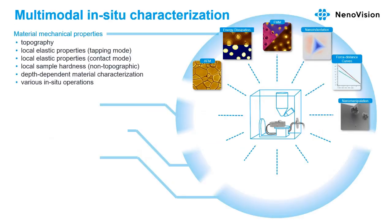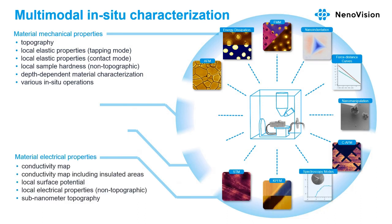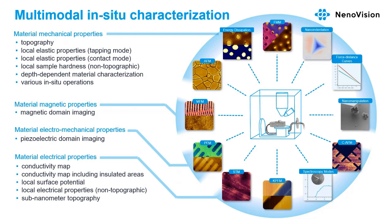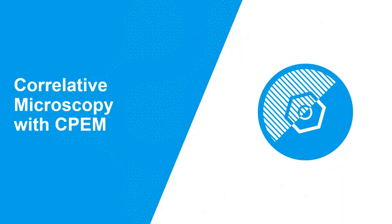With LightScope we measure several techniques. For mechanical properties: topography, energy dissipation, nano indentation, and measurement of local elastical properties. For electrical properties: conductivity mapping, local surface potential, I-V curves, and so on at high resolution. We can also measure piezoelectric domains and magnetic domain imaging — all within the SEM.